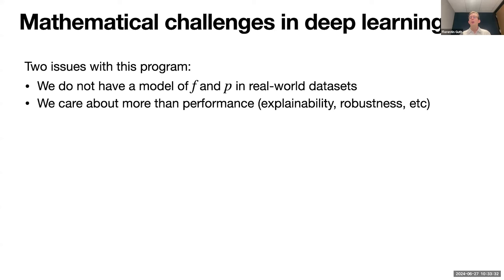We've made a lot of progress going bottom-up from the simplest setting, looking at more and more complicated settings with more structure on the function. But there are two issues with this program. First, we don't have a model of f and p for real-world datasets — we don't really know what assumptions to put there. For images we know there are locality properties and multi-scale structure, but this is not very precise.